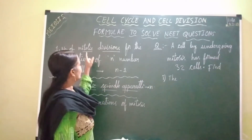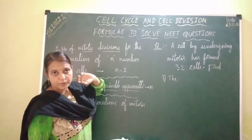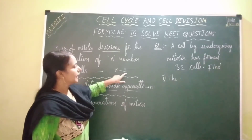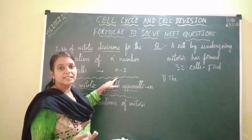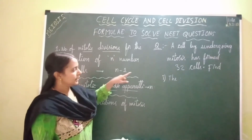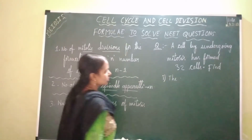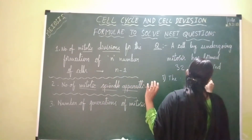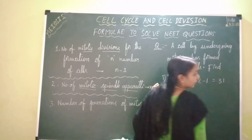To find the number of mitotic divisions for the formation of 32 cells, we use the formula n minus 1, where n equals the total number of cells formed. Here n is 32, so we take 32 minus 1, which gives us 31 mitotic divisions.